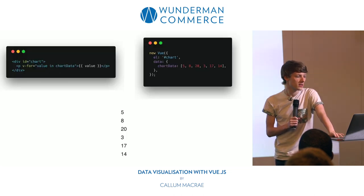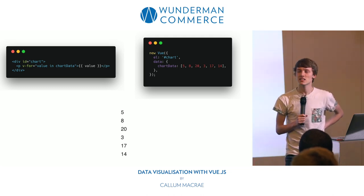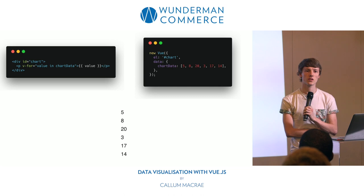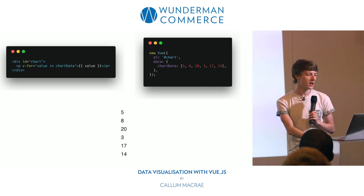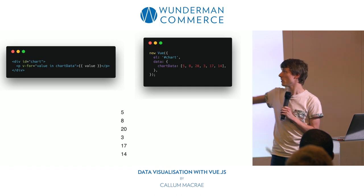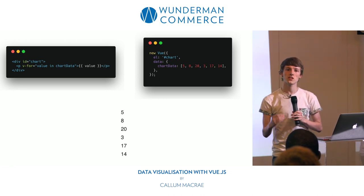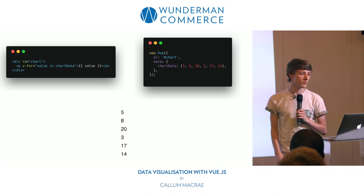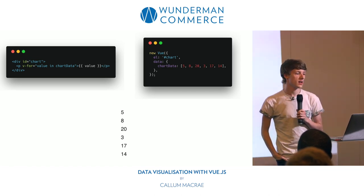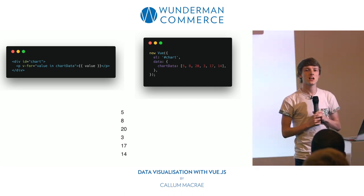Let's look at some Vue. How many of you have used Angular before? Any template language should be fairly familiar with this syntax. At the top left we've got our template, and at the top right we've got our JavaScript. What this is doing is looping through — on the right we're defining chart data, which is an array of numbers. On the left, we're using our v-for directive to loop through the array. It creates a new paragraph element for every single item in the array, and then inside we're using interpolation to output the value in every paragraph element.